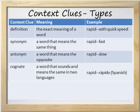The fourth type of context clue we're going to study today is cognate. A cognate is a word that sounds and means the same thing in two languages. For example, in English the word rapid is a cognate of rápido in Spanish. They sound similar and they mean the same thing.